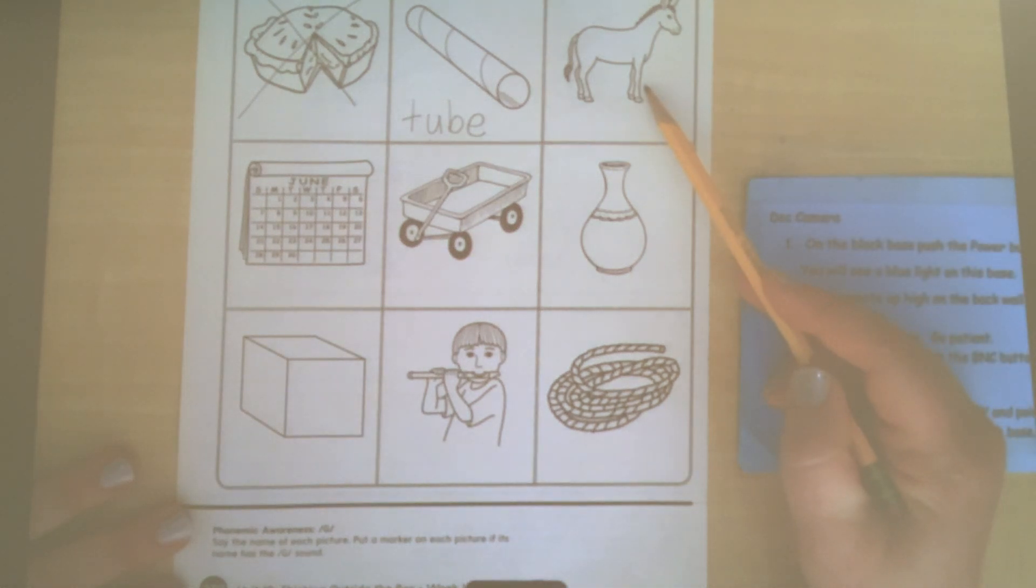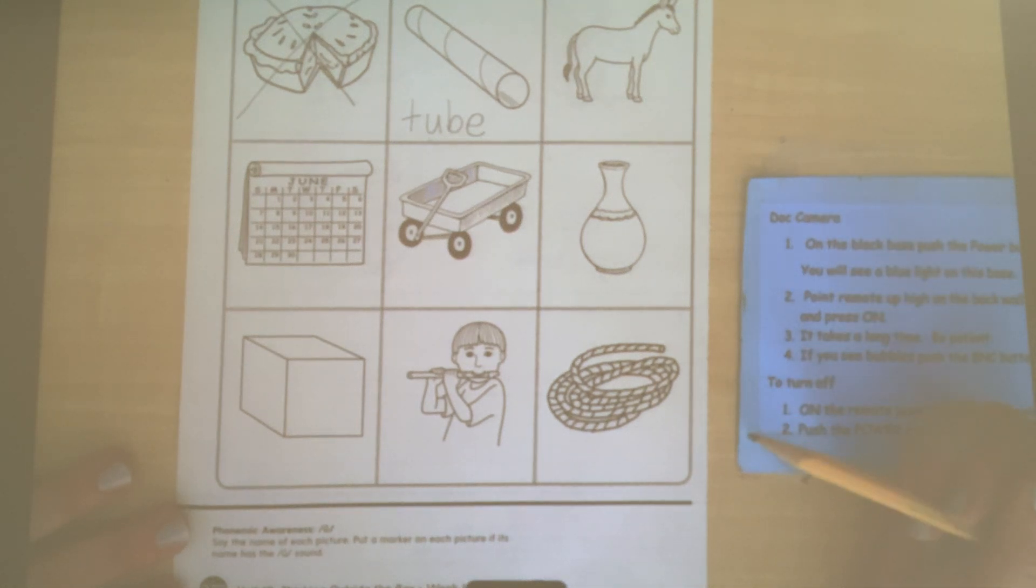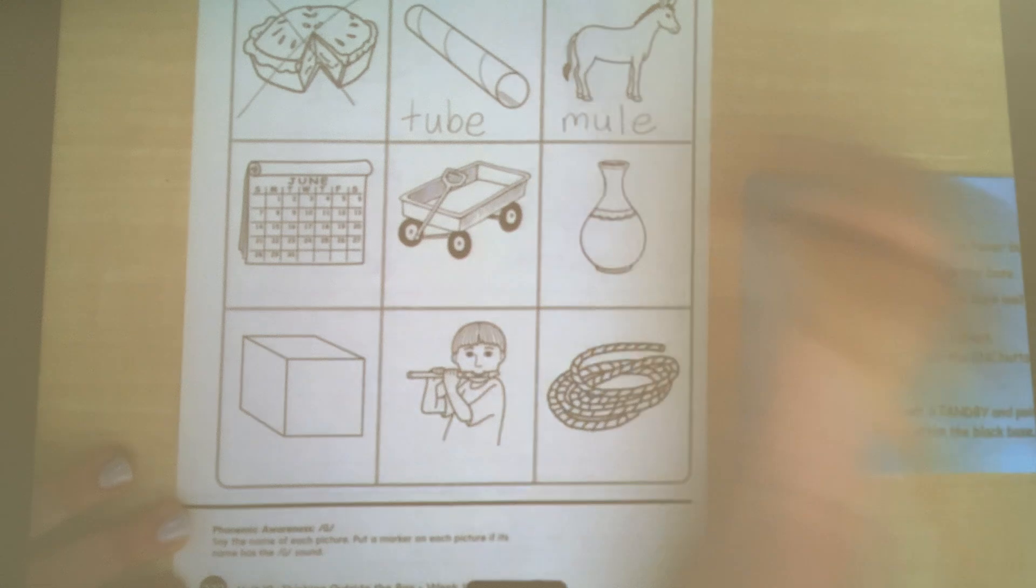Here's another one. We have a mule. Mule. It even sounds like I'm saying the letter U. M-U-L. That must be the long U sound. Ding, ding, ding. M-U-L. Bossy E.